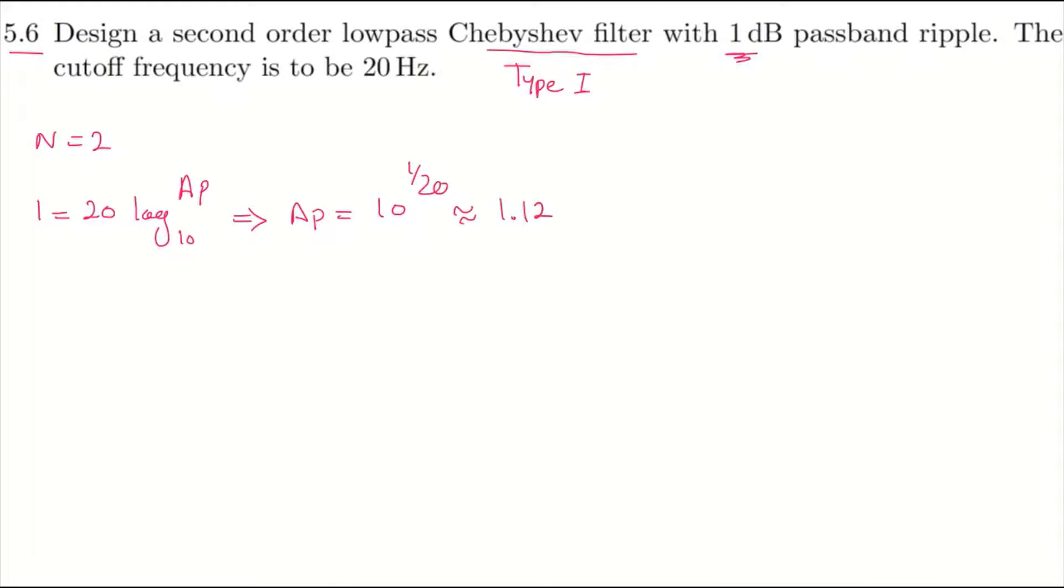This almost equals 1.12. This is the first step we're going to design such a filter. The second step, we should calculate the ripple factor, and that's epsilon equals the square root of Ap squared minus 1.